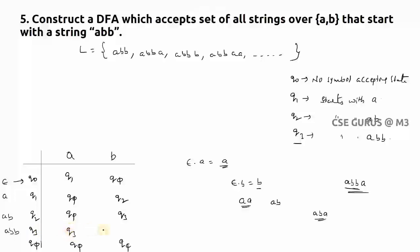For the final state Q3 only, you need a self-loop for both inputs A and B. Q3 on A goes to Q3; Q3 on B goes to Q3. Why? Because any string ABB followed by A or B is still starting with ABB, so the constraint is still satisfied. Remember: only for the final state Q3 do you write the self-loop. This is the key rule when solving 'starting with' problems.